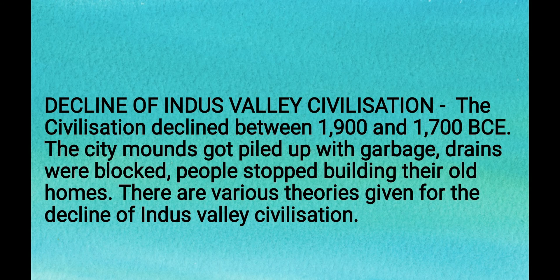The Indus Valley civilization declined between 1900 and 1700 BCE. The mounds got piled up, drains were blocked, and people stopped building their homes. There are various theories as to why the Indus Valley civilization came to an end. Let us look at all of these different theories one by one.